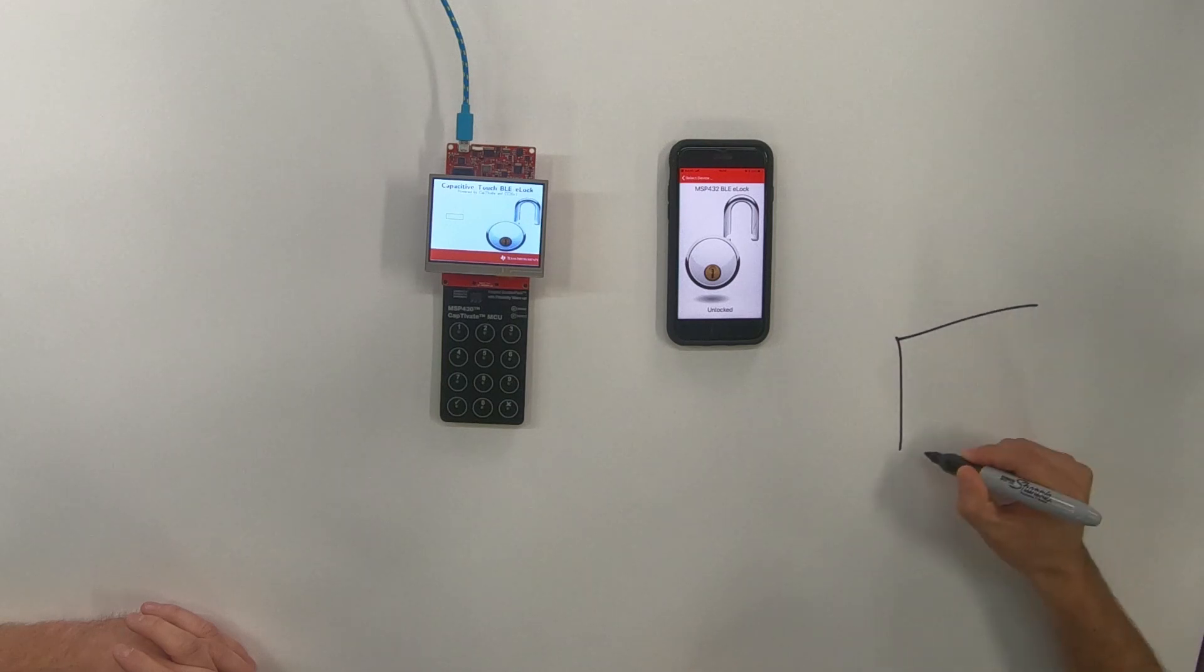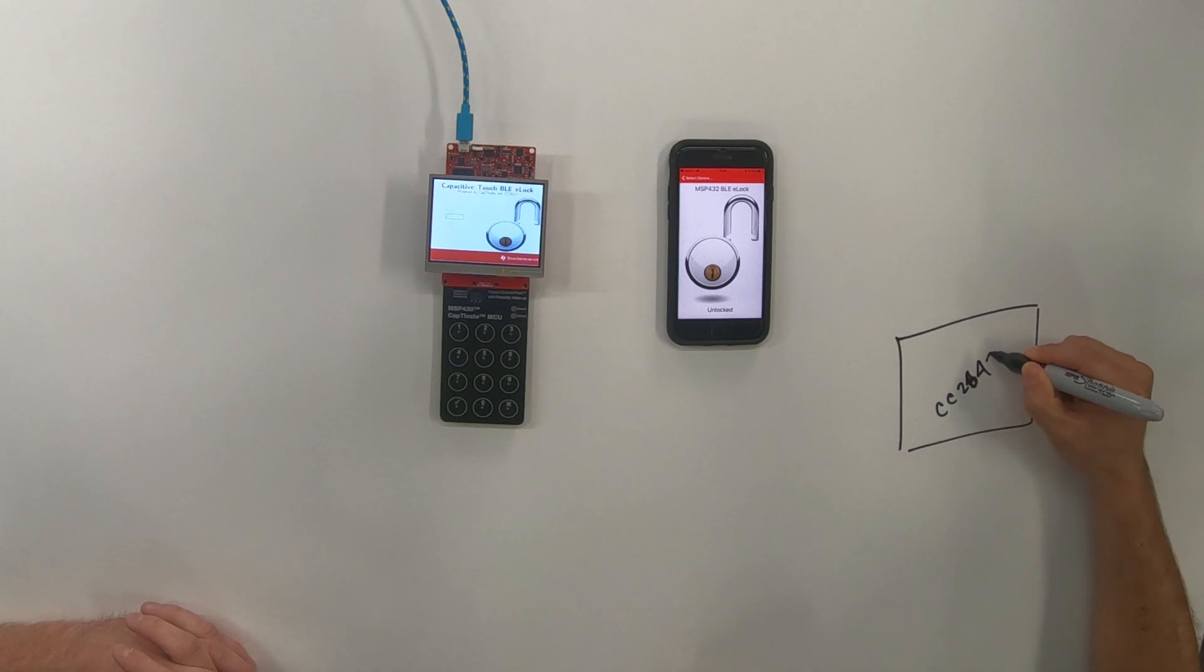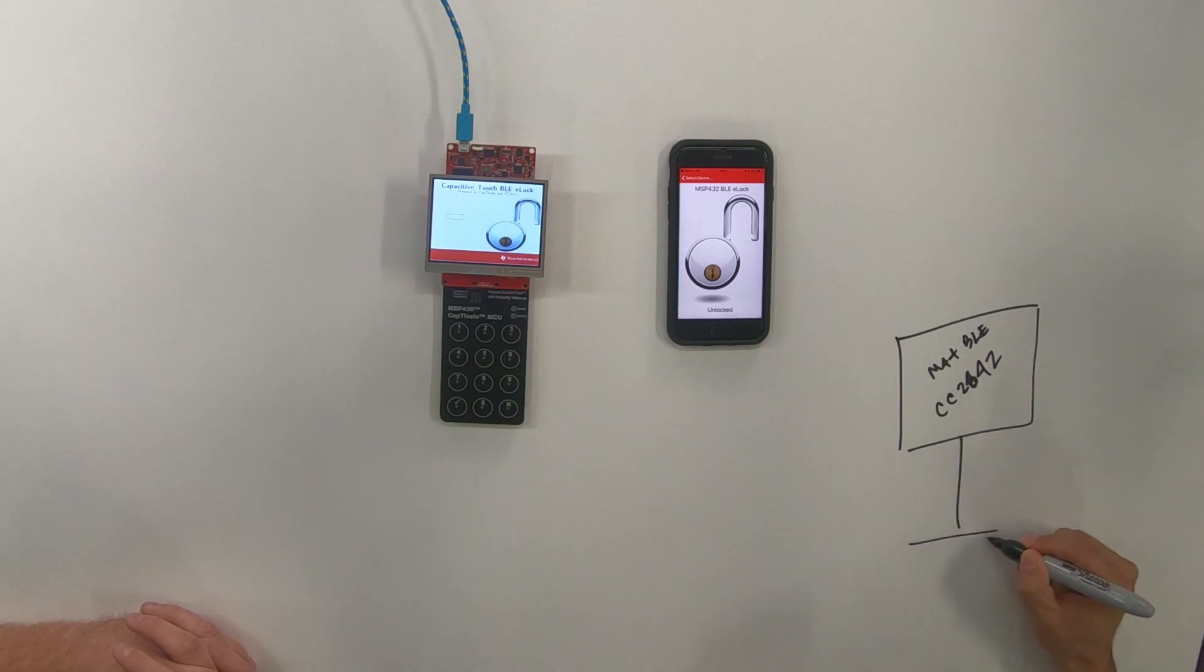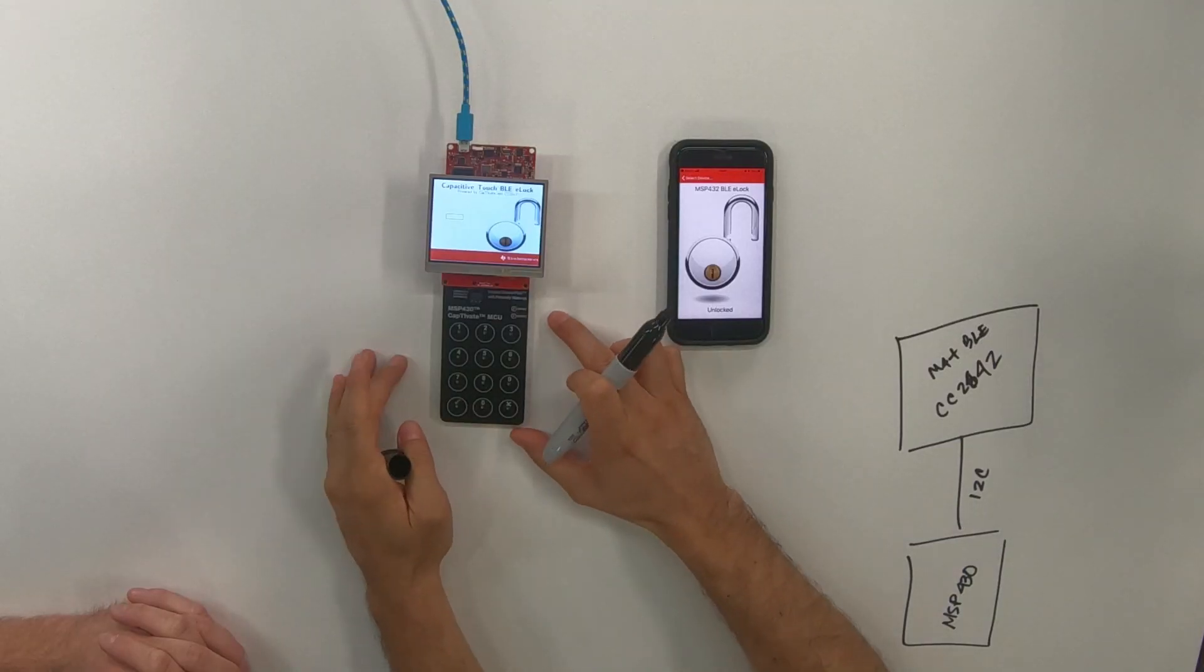Let's start with the main microcontroller. In this case, we're using a CC2642. And this one has Cortex M4 plus BLE radio. And this one is connected to a Captivate device. This is an MSP 430. It's connected to I2C. And this Captivate device is the capacitive touch keypad. Correct. That's a CapTouch. And this is the booster pack that you can see right over here.